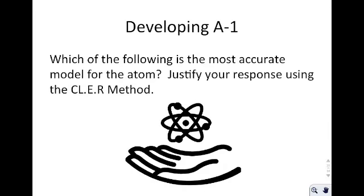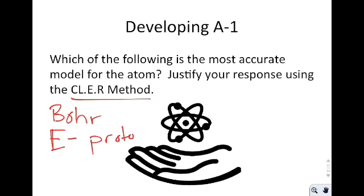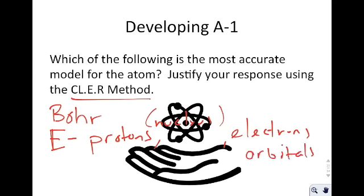Which of the following is the most accurate model of the atom? Justify your response using the CLEAR method — conclusion, evidence, and reasoning. The conclusion: the Bohr model is clearly the most accurate model. The evidence: it includes the nucleus (protons), it includes the electrons, and it includes orbitals. Other models include some of these — some include protons and electrons but not orbitals; one includes electrons but not protons or orbitals. The reasoning is that the Bohr model includes more pieces of information and a greater specificity than the previous models did.